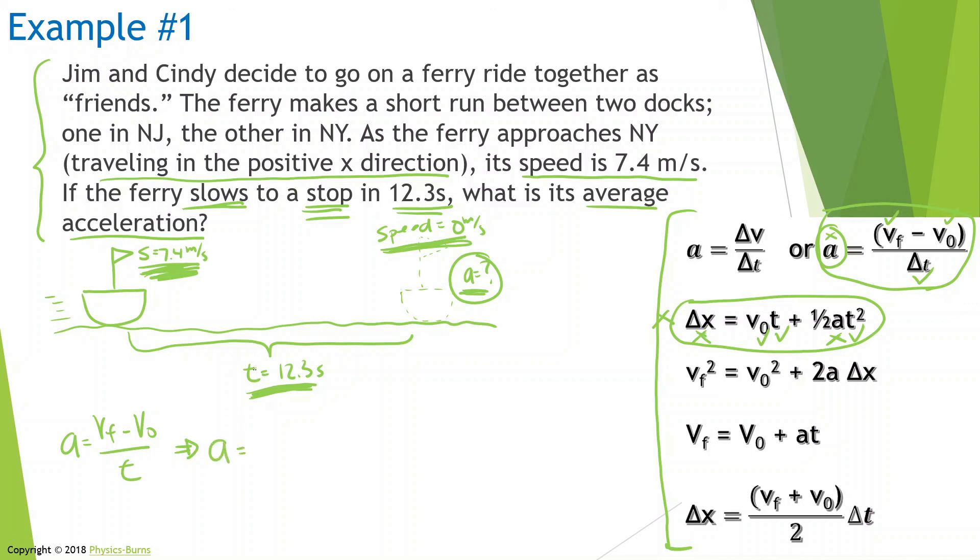Let's plug things in. Acceleration—that's what we're looking for. Velocity final—it comes to a stop, so that's zero. The boat was going 7.4 meters per second at the beginning, and it took 12.3 seconds to come to a stop. Now if I put this into my calculator, 0 minus 7.4 divided by 12.3, I get negative 0.6 meters per second squared. It's a reasonable number and we see it all makes sense.